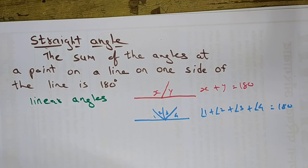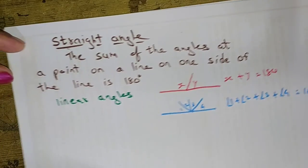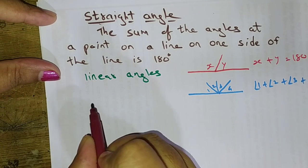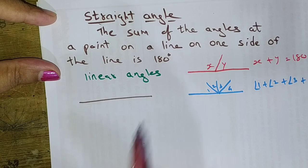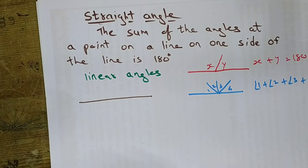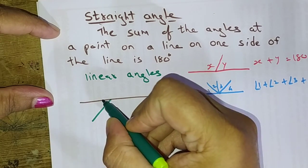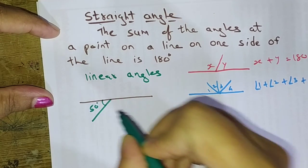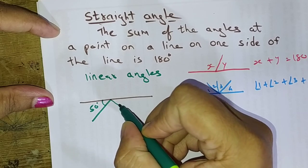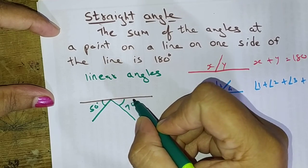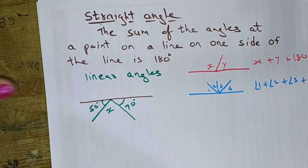Now let us take an example and try to solve it. This is a straight line and on this straight line some angles are formed. A 50-degree angle is formed on one side, a 70-degree angle is on the other side, and this is x.